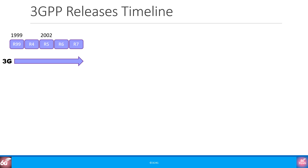Release 99 was renamed to Release 3, but nobody really uses R3. Based on that, we had some 3G networks in Japan and Europe. 3G was not good enough, so it was enhanced by HSDPA as part of Release 5 standards. This was known as 3.5G informally. There was also HSUPA as part of Release 6 and HSPA Plus enhancements as part of Release 7.